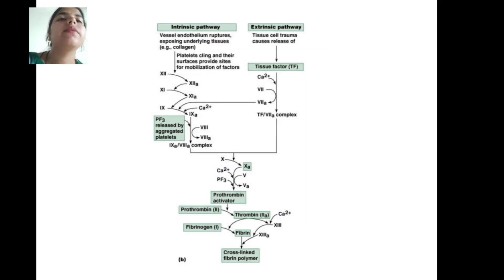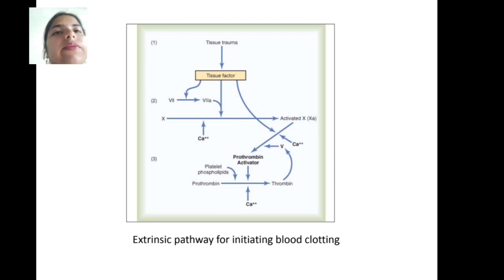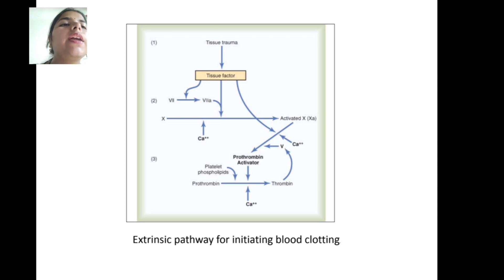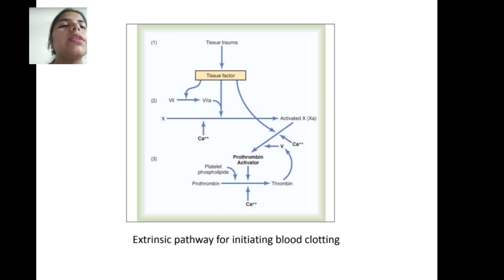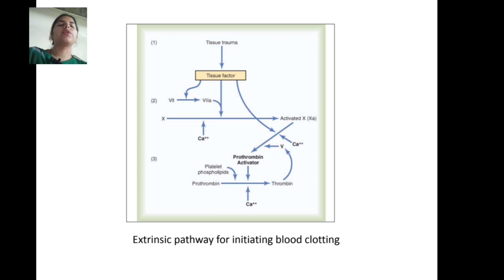In the diagram we can see both pathways: the intrinsic pathway and the extrinsic pathway. In the case of tissue trauma, tissue factor interacts with factor 7 and 7a. Factor 10 is converted into activated factor 10a, which forms the prothrombin activator. Platelet phospholipids and calcium facilitate conversion of prothrombin into thrombin, initiating blood clotting.